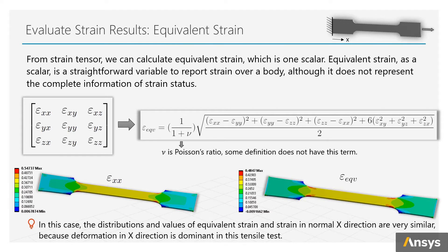This is expected because deformation in tension direction is dominant in this tensor test, and the equivalent strain reflects such dominant strain status well.